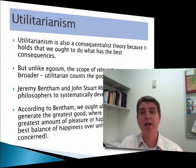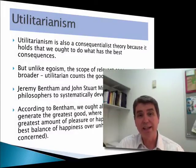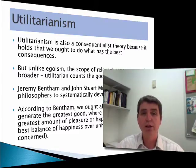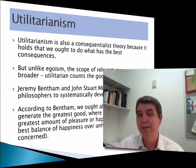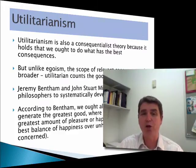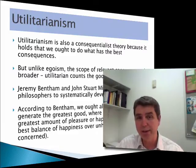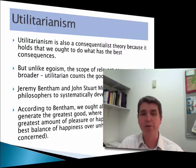Perhaps the most well-known consequentialist theory is utilitarianism. Utilitarianism takes ethical egoism but expands the set of who is made better off. The basic idea is we decide what is ethical based upon the total good, or the total happiness — in economics terms, the total utility — for all the parties involved when that's maximized. So again, we're focused on the outcome: what maximizes that utility for all of the people involved?